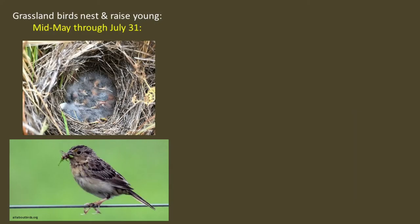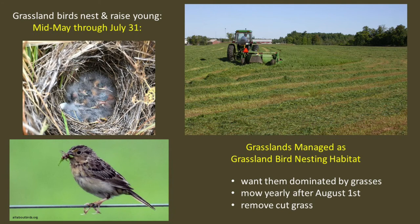Grassland birds are nesting and raising their young between about mid-May through the end of July. Fields that we manage as nesting habitat for grassland birds should be mowed once each year, no earlier than August 1st, and ideally the cut grass should be removed. This yearly mowing keeps the fields dominated by grasses rather than allowing wildflowers and young shrubs to grow up in the field. Mowing after August 1st is late enough that nests and fledgling birds won't get destroyed by mowing equipment.